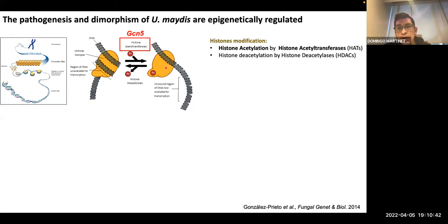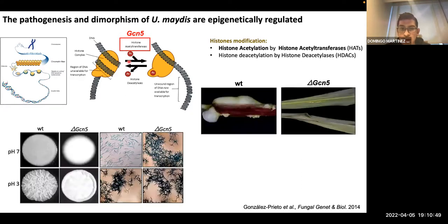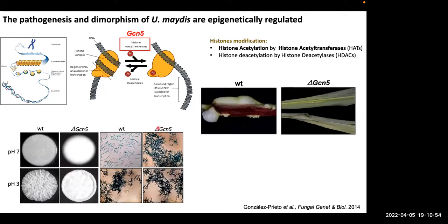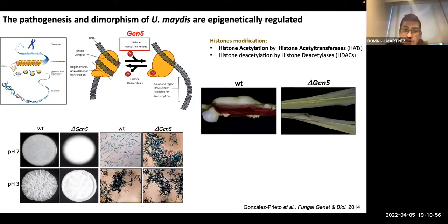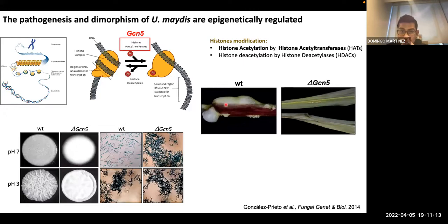What happens when we induce deletion of the GCN5 gene in Ustilago maydis? The GCN5 mutant grows constitutively as a mycelial form, as you can see here compared to the wild type, but also the mutant is affected in virulence. The mutant induces only small tumors, while the wild type induces big tumors in the plant tissue, as you can see in these pictures.